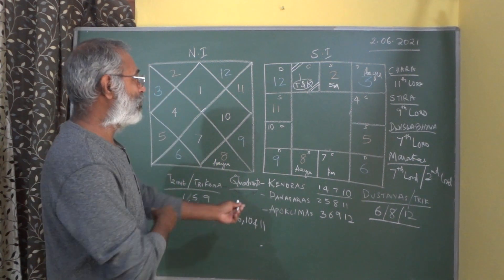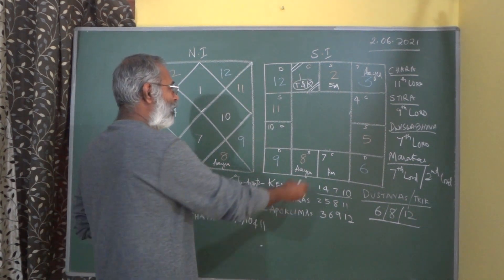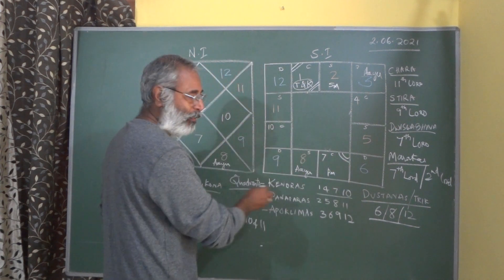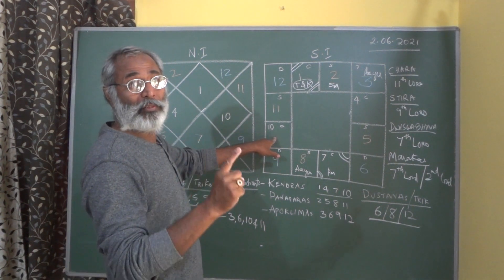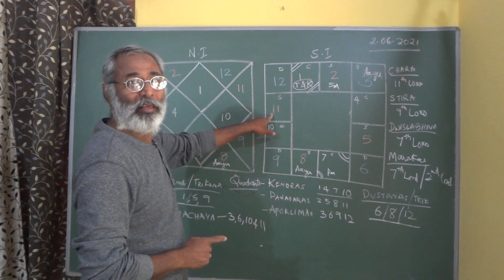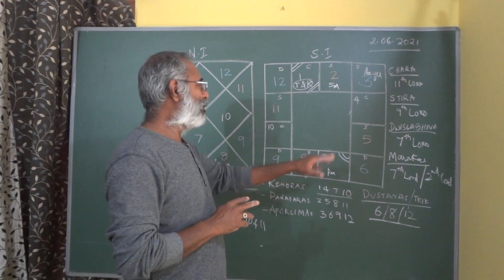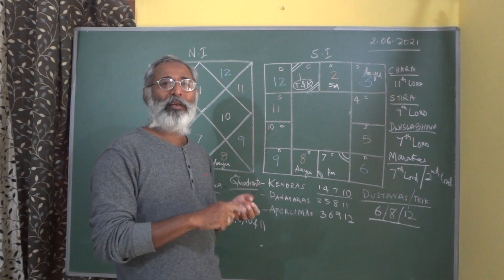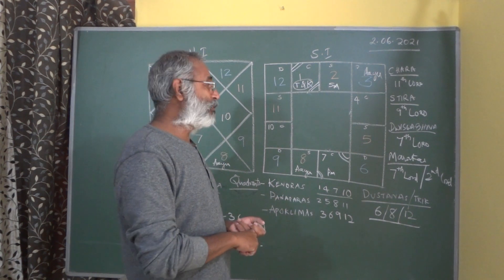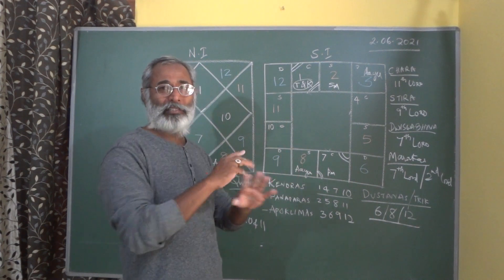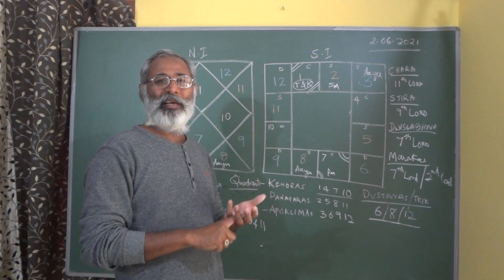If a planet owns a Kendra and is also an owner of a Trikona, then the Dosha will not apply. For example, for Libra Lagna, Saturn is the 4th Lord — that means it could give rise to Kendradhipati Dosha — but it will not, because it is also the 5th Lord. It becomes a Yoga Karaka. There is one exemption rule: Sun, though it is a Kendra Adipati, will never acquire Kendra Adipatya Dosha.